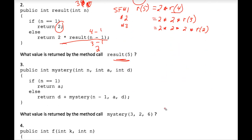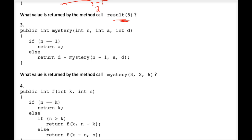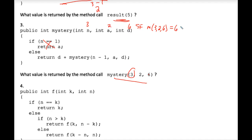Moving to exercise three on this worksheet. We have a recursive method with three parameters. The m mystery of three, two, six. In stack frame one, n is three — that is not one, so we don't hit the base case. We return d plus, and d is six at this moment. So we rewrite this as six plus the mystery of n minus one, which is three minus one equals two, as the first parameter. And a and d come along unchanged, so two and six plug in here as parameters.